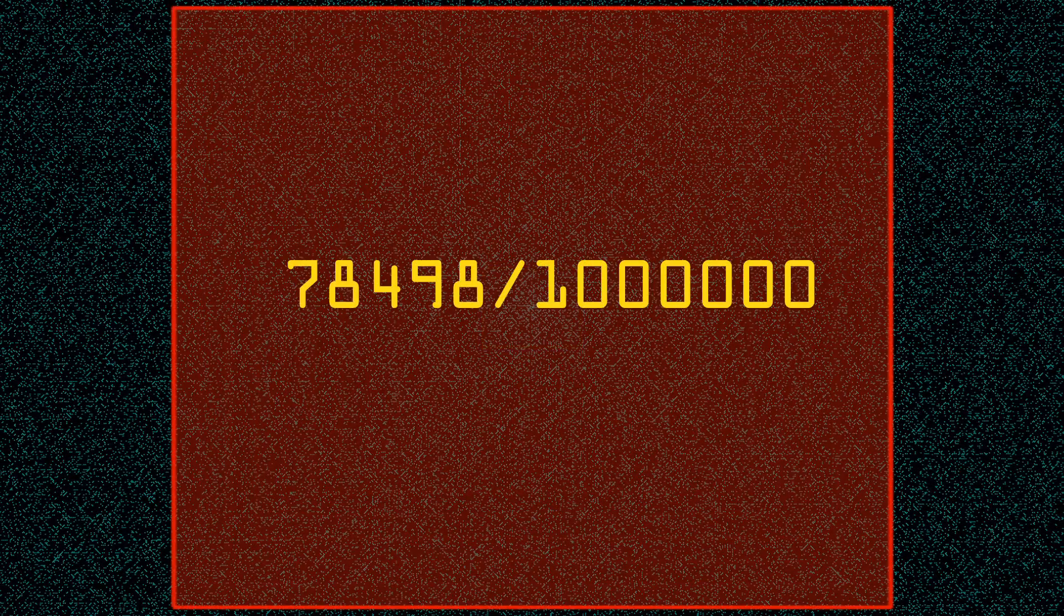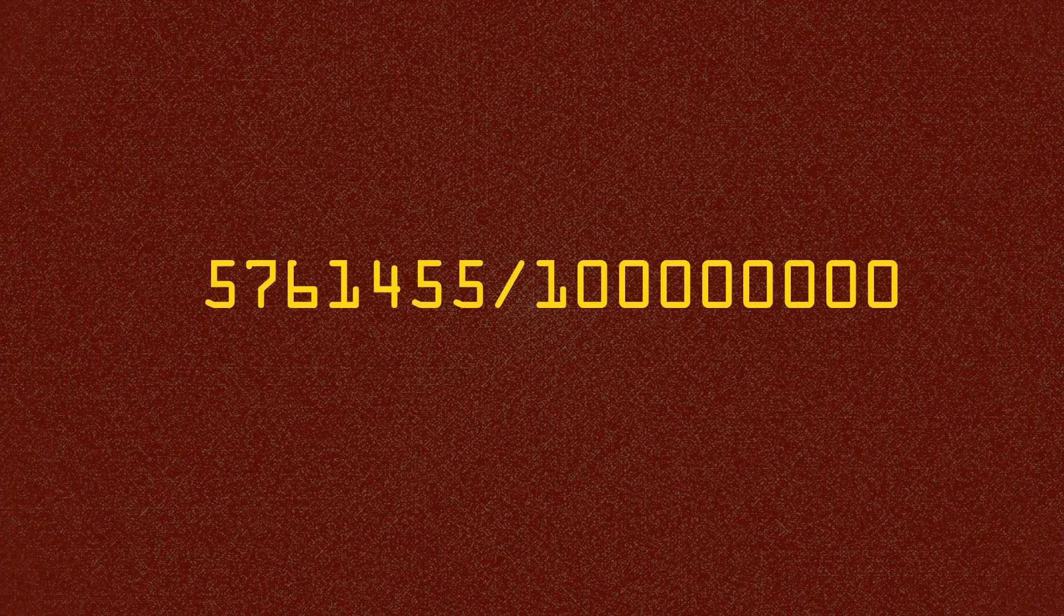Of the first 1000 integers we find 129 primes, 12.9% are prime. Of the first 1 million integers 7.84% are prime, and the first 100 million integers contain 5.76% prime. As we search further this density continues to drop, though the speed at which it drops slows down.